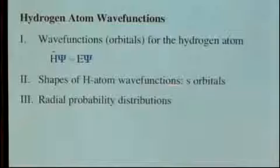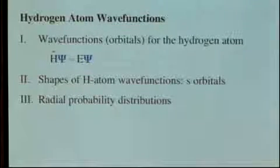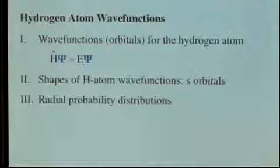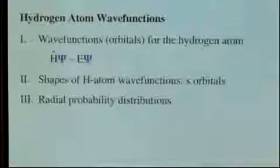We're also going to talk more about what psi actually means. When we first introduced the Schrödinger equation, I told you to think of psi as being some representation of what an electron is. We'll get more specific here, more specific even than just saying you can think of it as an orbital. We'll really think about what psi means, and in doing that, we'll also talk about the shapes of H atom wave functions, specifically the shapes of orbitals, and then something called radial probability distribution.